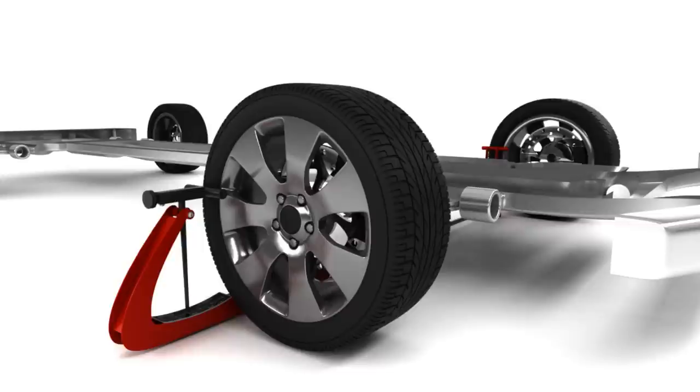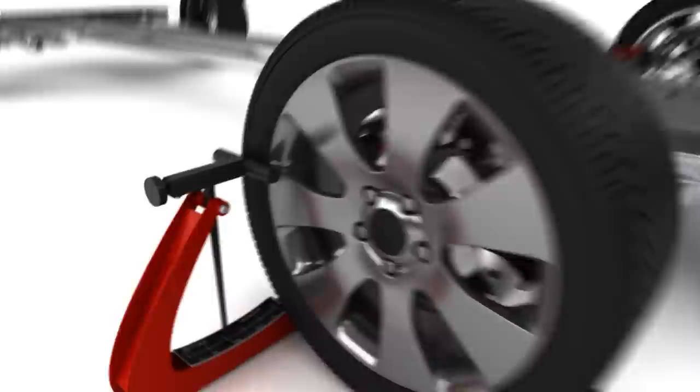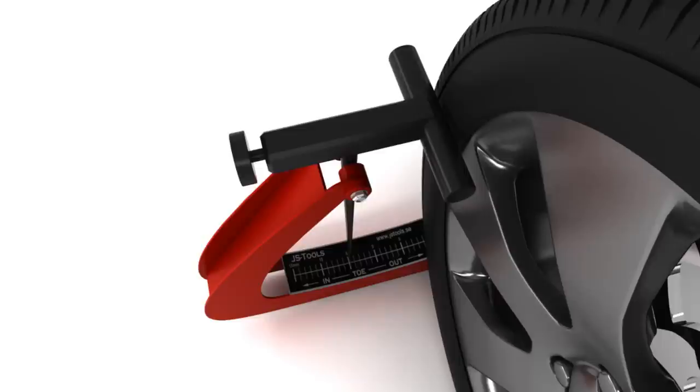The measurement is then repeated on the tire's trailing edge. Any difference in the readings of the leading and trailing edges will be your toe-in or toe-out value.